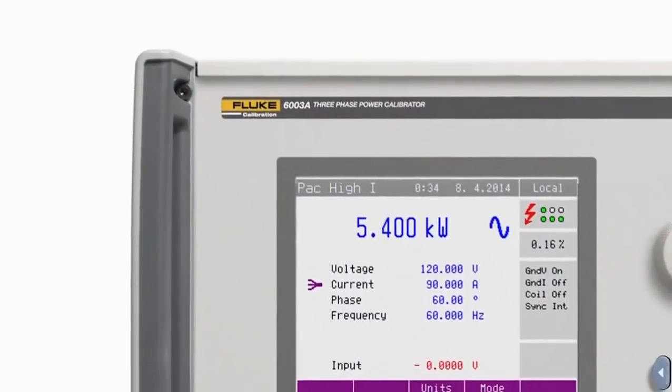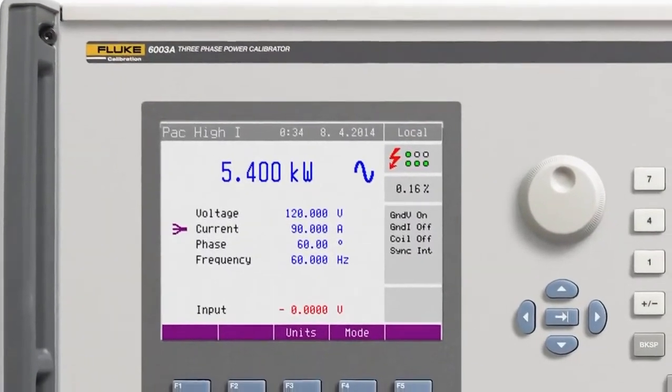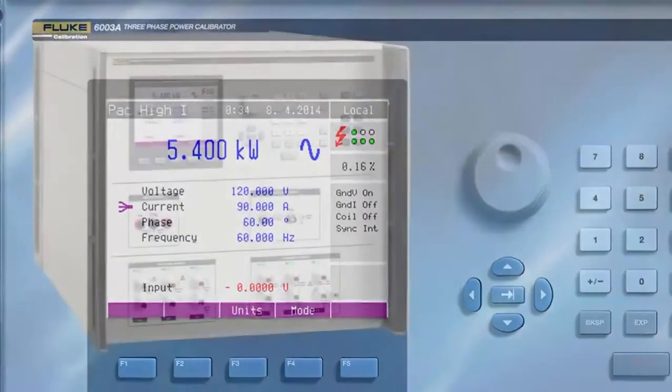The 6003A three-phase electrical power calibrator gives you a simple single instrument solution for three-phase power and energy calibration.